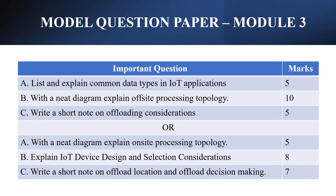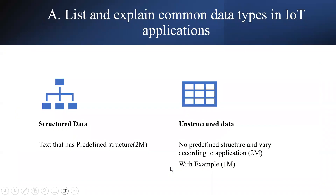Now I will be telling you how each question's mark is split up. For the question 'list and explain common data types in IoT applications' — IoT has two common data types: structured data and unstructured data. Specifying these two words earns you one mark.